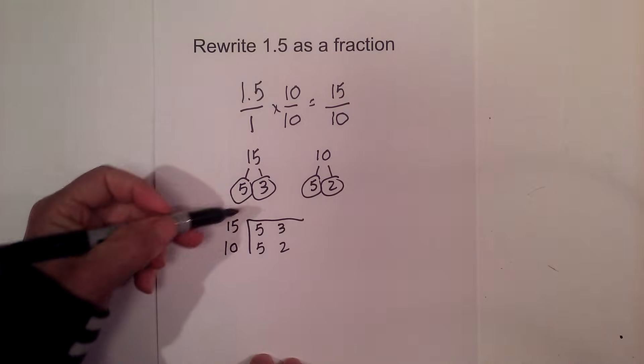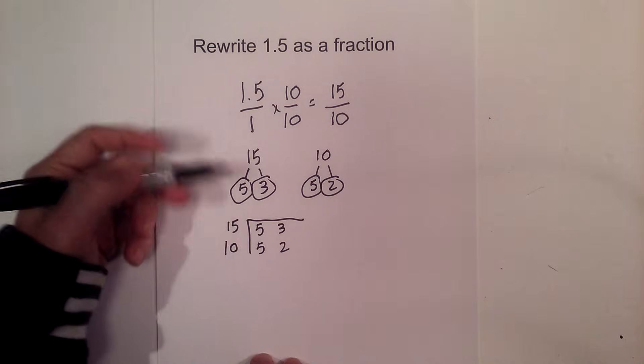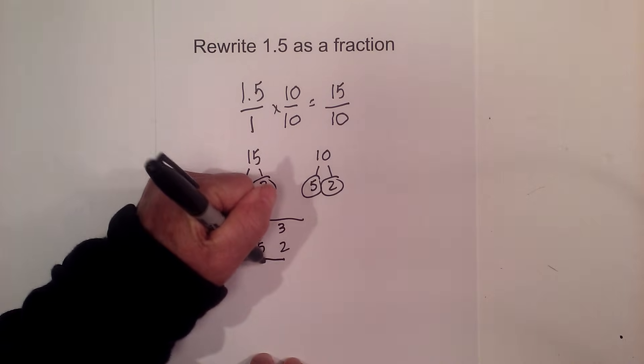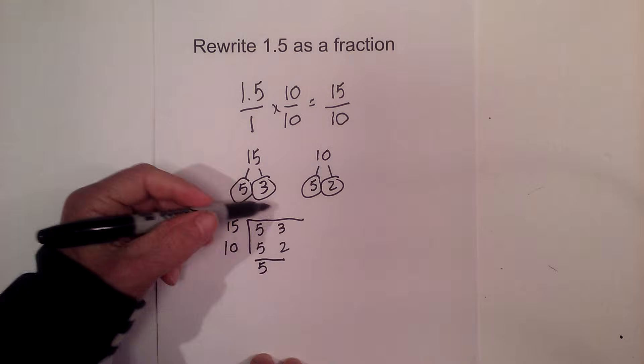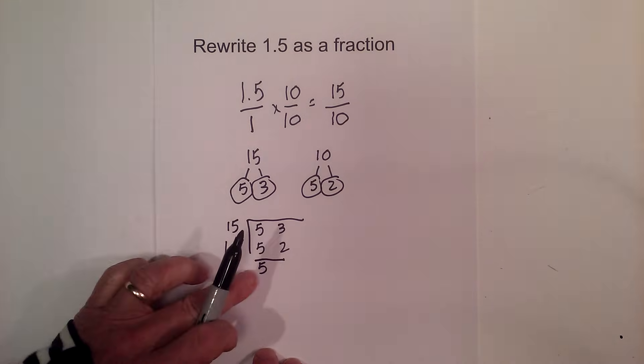So now the rule is if you're finding the GCF, the greatest common factor, if you have a vertical pair, then you can bring down one number. And so we have a vertical pair here, but not here. So the greatest common factor is 5.